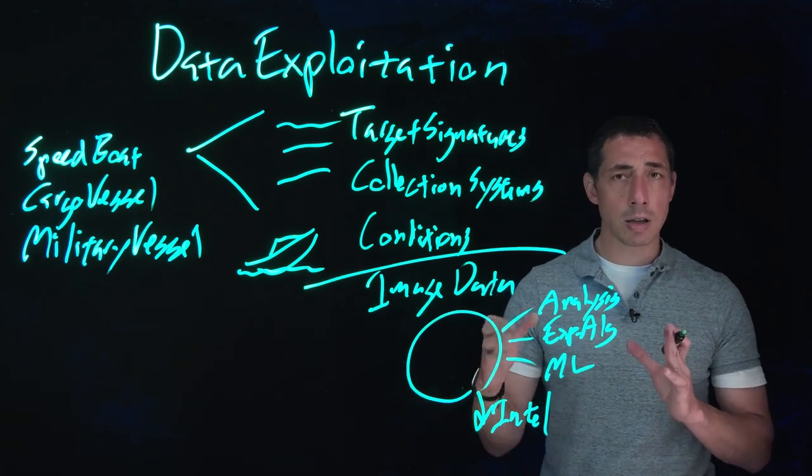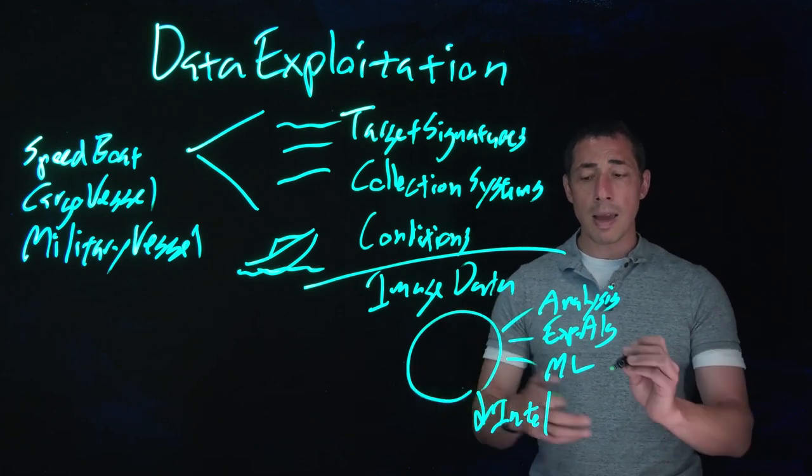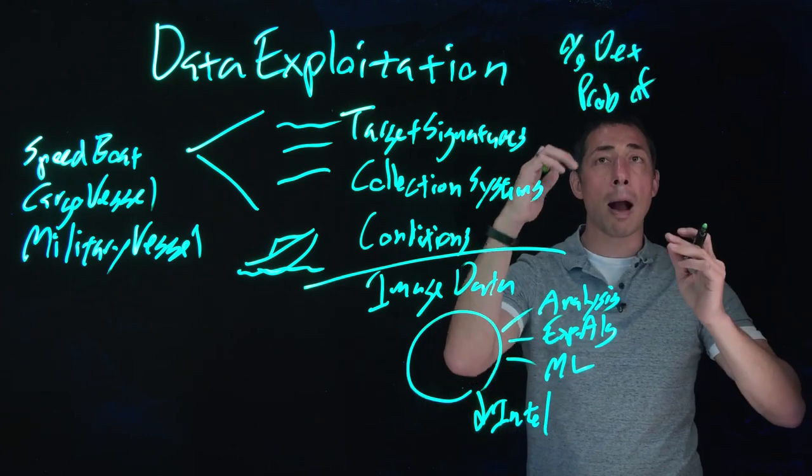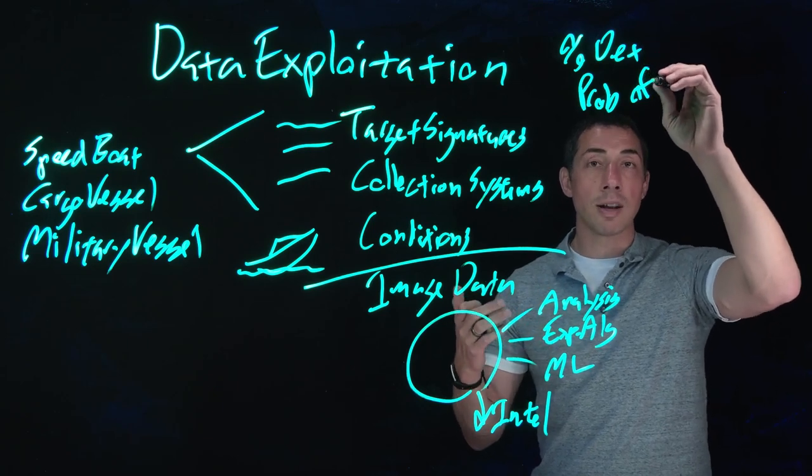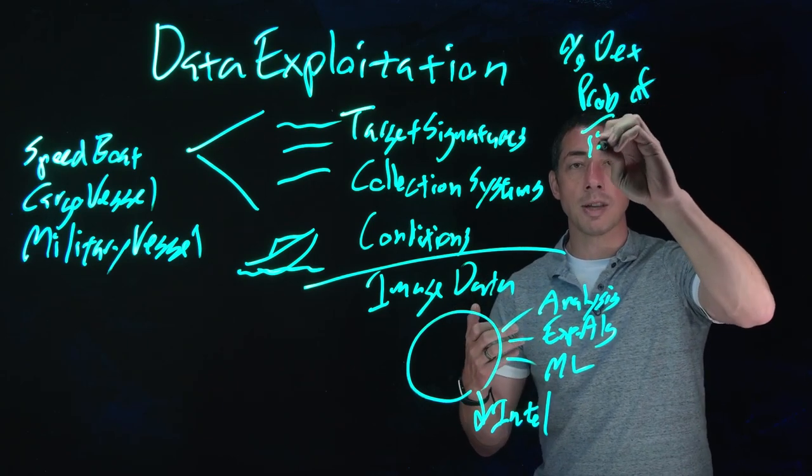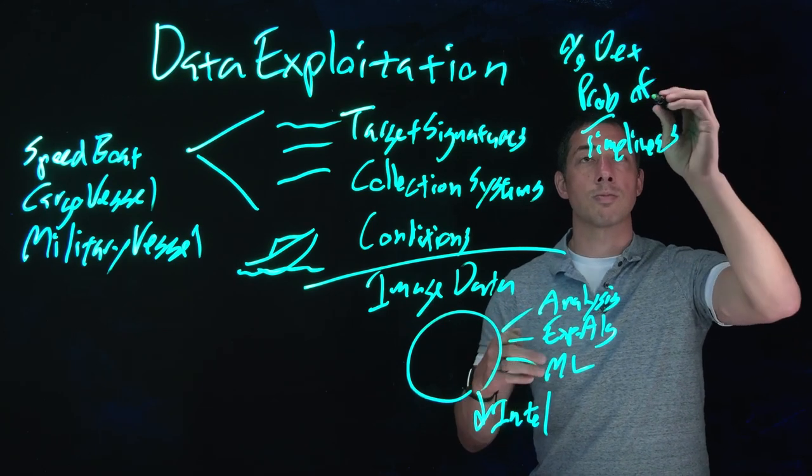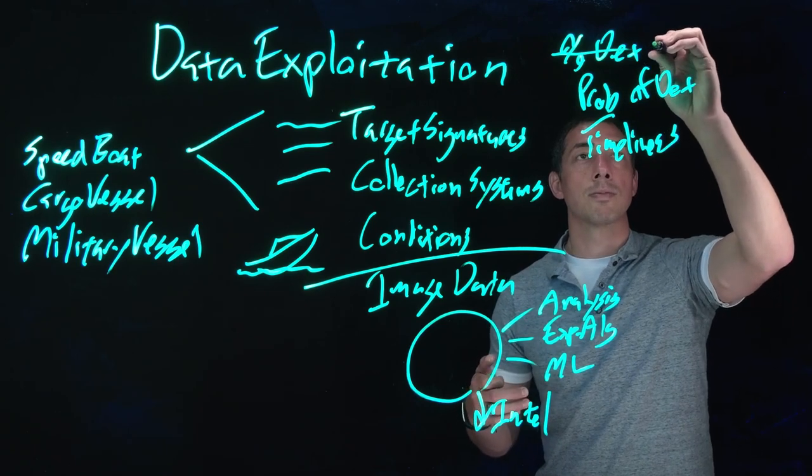And then this intelligence is going to be evaluated with a number of different criteria. So for example, maybe the intelligence is going to be evaluated on, you've got your probability of detection, you've got your percent confidence, or you've got some type of timeliness. So we've got our probability of detection, and we've got percent confidence.